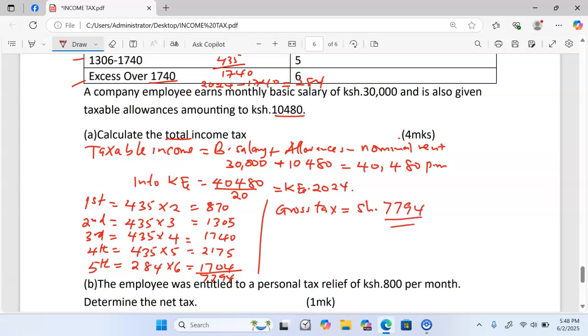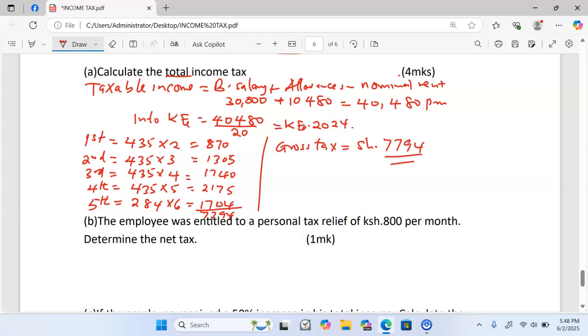Part B: the employee was entitled to a personal tax relief of 800 per month, determine the net tax. To get net tax, we simply take the gross tax, you minus relief. In this case, the gross tax is 7794, minus a relief of 800, and this one is going to give us an amount equivalent to 6994.